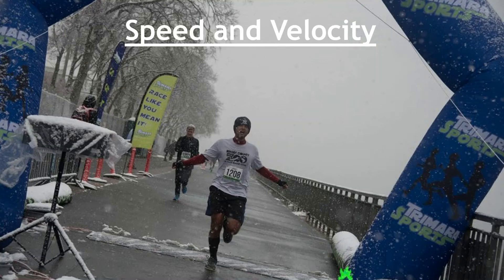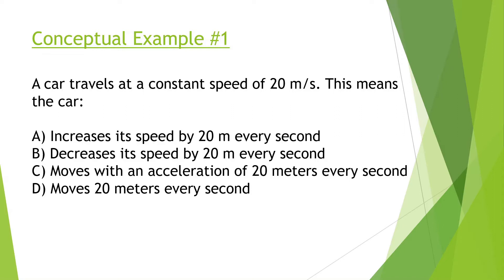Alright everybody, so today we're talking about speed and velocity. Let's look at this first conceptual problem to kick us off. A car travels at a constant speed of 20 meters per second. What does this mean? Sometimes we hear like 50 miles an hour, or someone's doing that baseball at 100 miles an hour, or that car is going 120 kilometers an hour. When something says it's going 20 meters per second, what that means is in one second, it travels 20 meters.